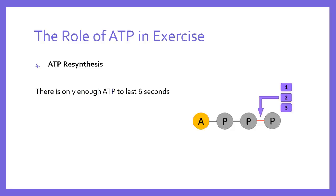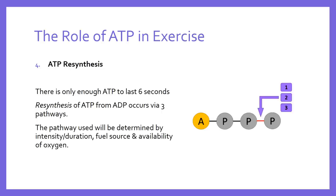We need to re-synthesize ATP because only ATP can be used to drive muscular contraction — we can't use anything else. The body actually has three different ways in which it can re-synthesize ATP. Depending on the intensity and duration of the exercise, the demand for ATP, the fuel sources available within the body, and whether or not oxygen is available — those factors will determine which pathway or system the body chooses to use to re-synthesize ATP.